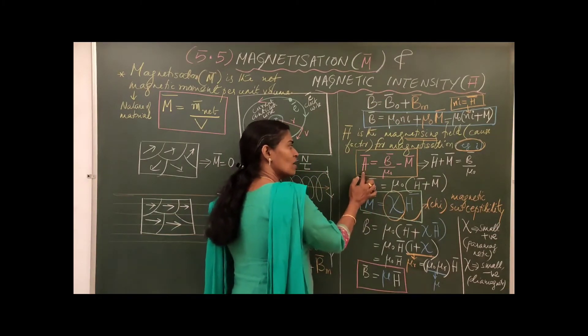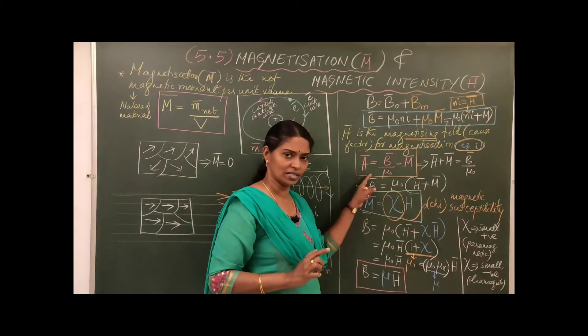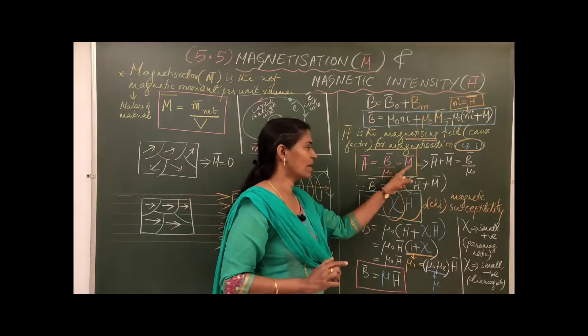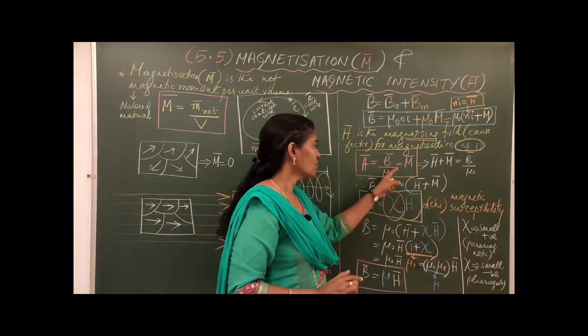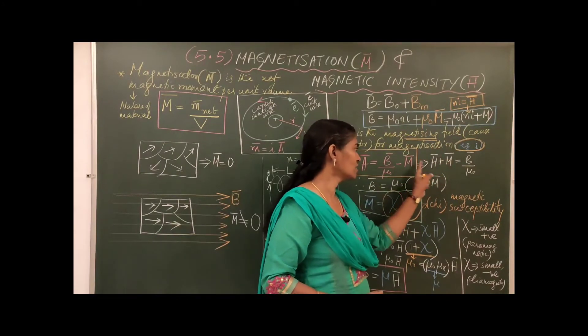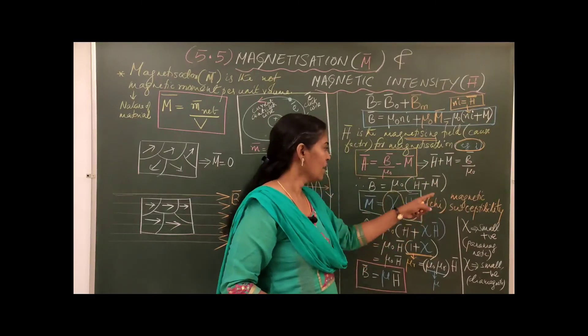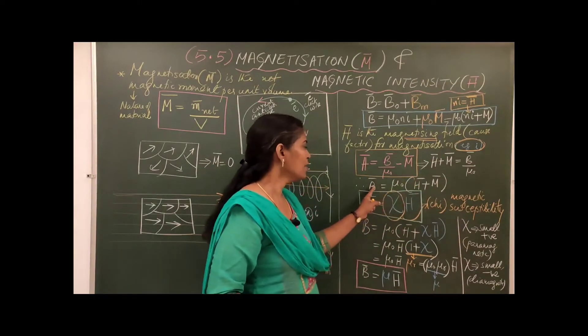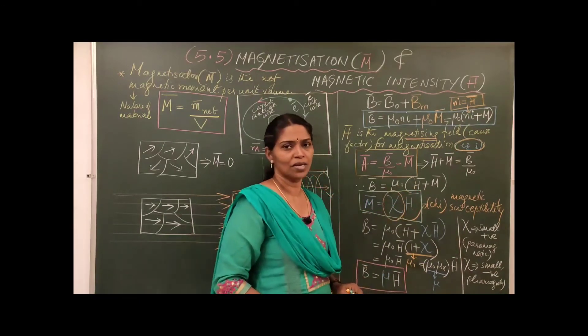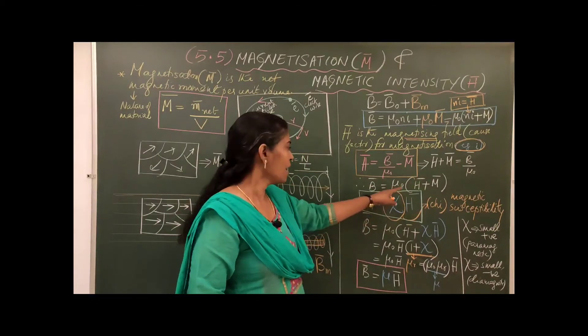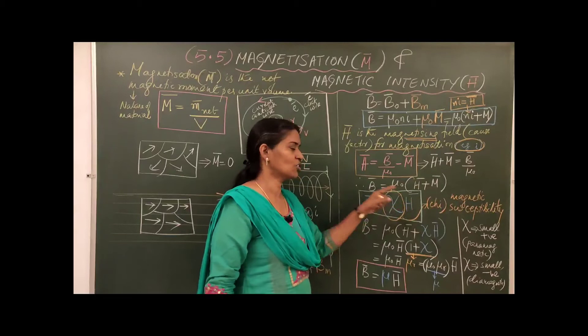Now in NCERT H bar is defined by this equation. The defining equation of H bar is B bar by mu zero minus M bar. All these terms we have studied. So rewriting, taking M bar to the other side: H bar plus M bar is equal to B bar by mu zero. Again mu zero multiplied, you will get B bar equal to mu zero into H plus M bar. Now comes the new equation: M bar is directly proportional to H bar, for sure.